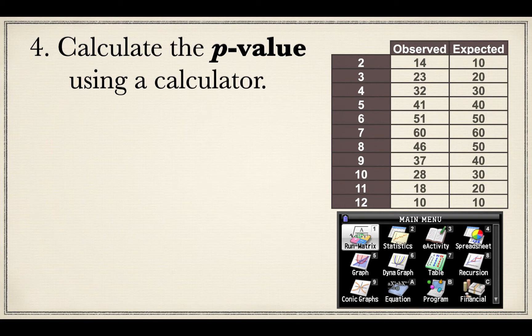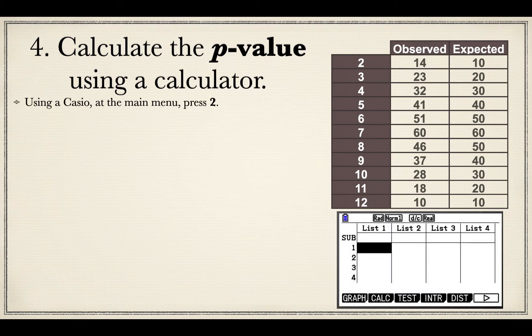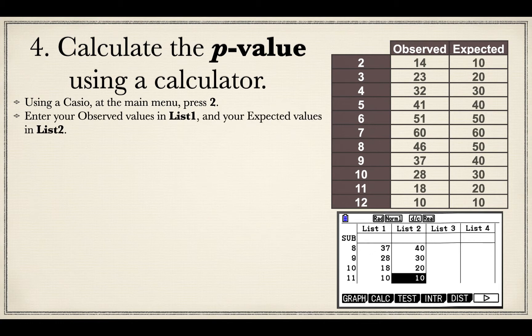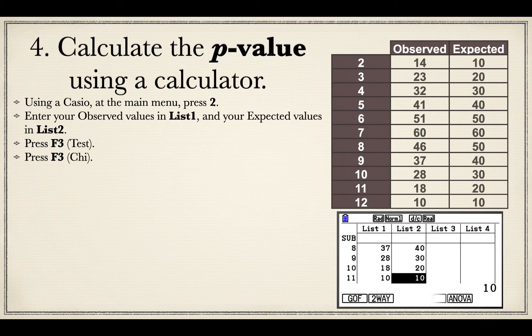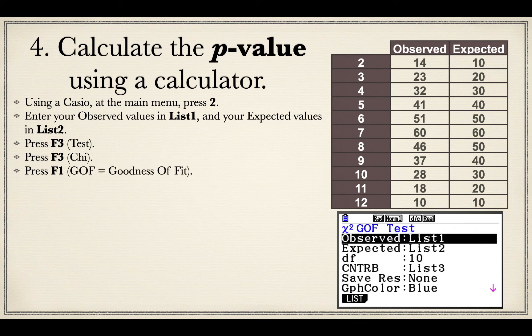Now I'm going to go to my p-value on my calculator. Using a Casio, again, I go to option 2, which is statistics. And I enter my observed values in list 1 and my expected values in list 2. So I have 11 rows of data. And I press F3 because I am performing a test. It is a chi test, so I'm pressing F3 again. It is a goodness of fit test, so I'm pressing F1 for that option.